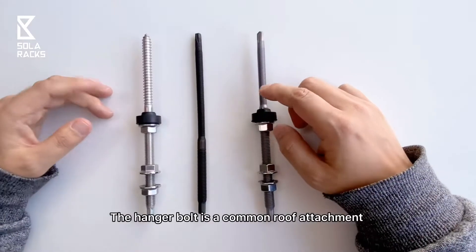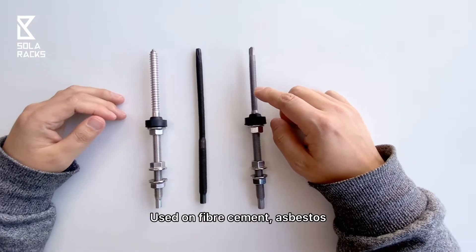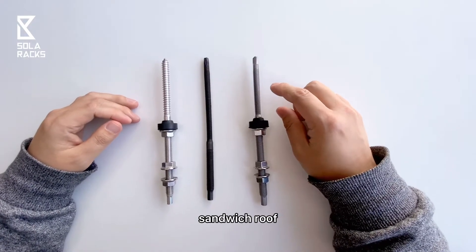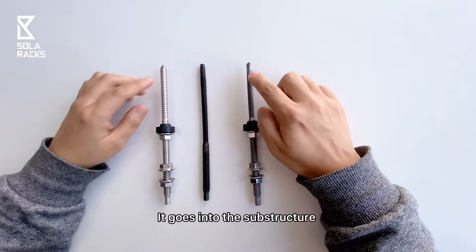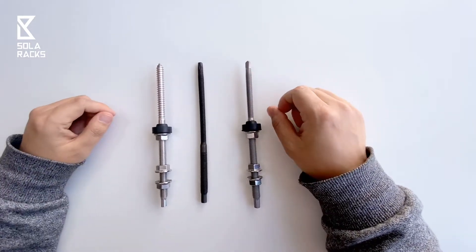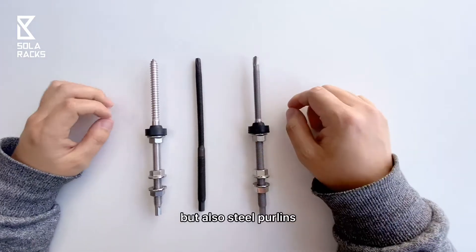The hanger bolt is a common roof attachment used on fiber cement, asbestos, sandwich roof, trapezoidal metal sheet roof, etc. It goes into the substructure, timber batten mostly, but also steel purlins.